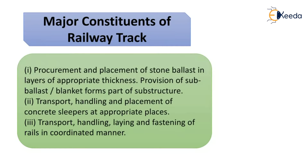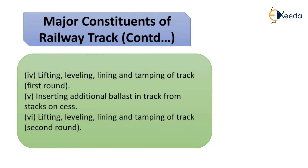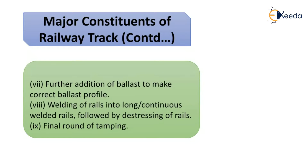The major constituents of railway track construction include: procurement and placement of stone ballast; provision of sub-ballast forming part of the substructure; transporting, handling and placement of concrete sleepers; transporting, handling, laying and fastening of rails; lifting, leveling, lining and tamping of track; inserting additional ballast; further addition of ballast to achieve the correct ballast profile; welding of rails into long continuous welded rails followed by de-stressing of the rails; and a final round of tamping.